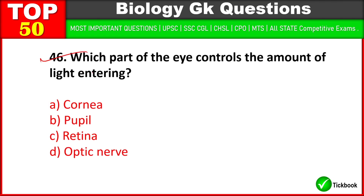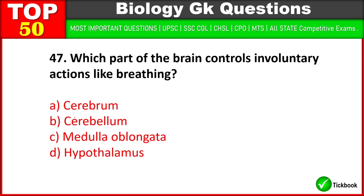Which part of the eye controls the amount of light entering? B is the right answer: pupil. Which part of the brain controls involuntary actions like breathing? C: medulla oblongata.